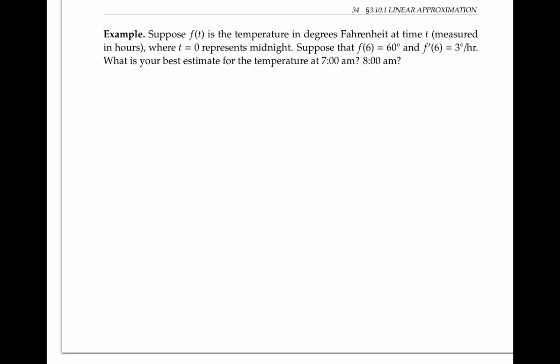Suppose that f of t is the temperature in degrees Fahrenheit at time t measured in hours, where t equals zero represents midnight. Suppose that f of six is 60 degrees, and the derivative f prime of six is three degrees per hour. What's your best estimate for the temperature at 7am and at 8am?